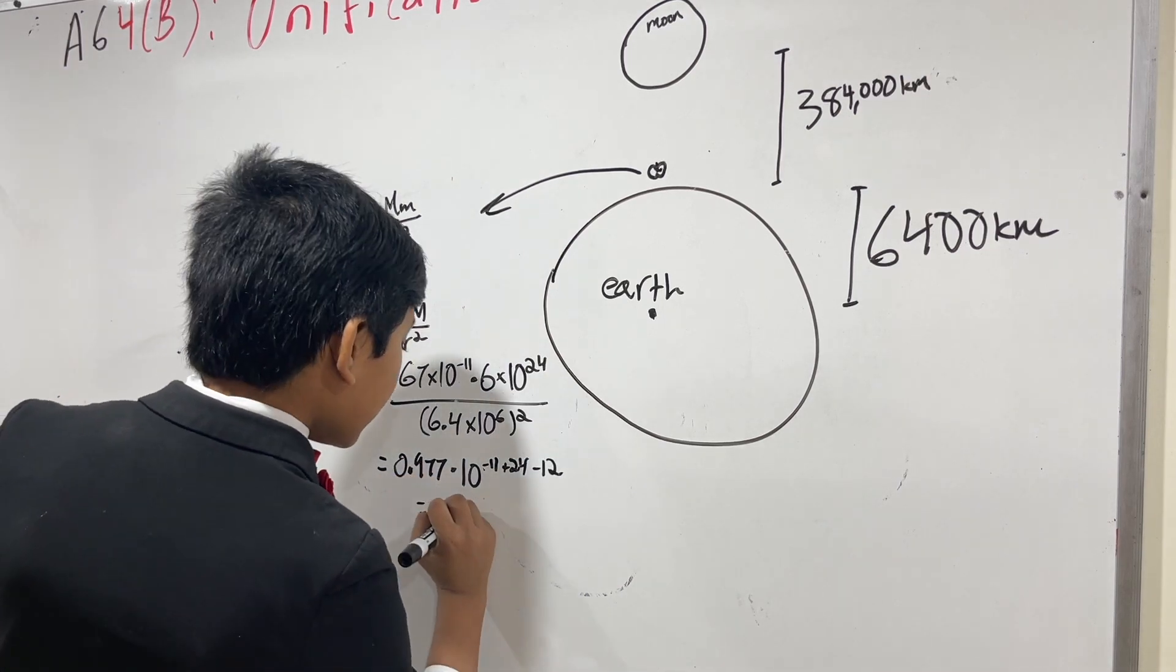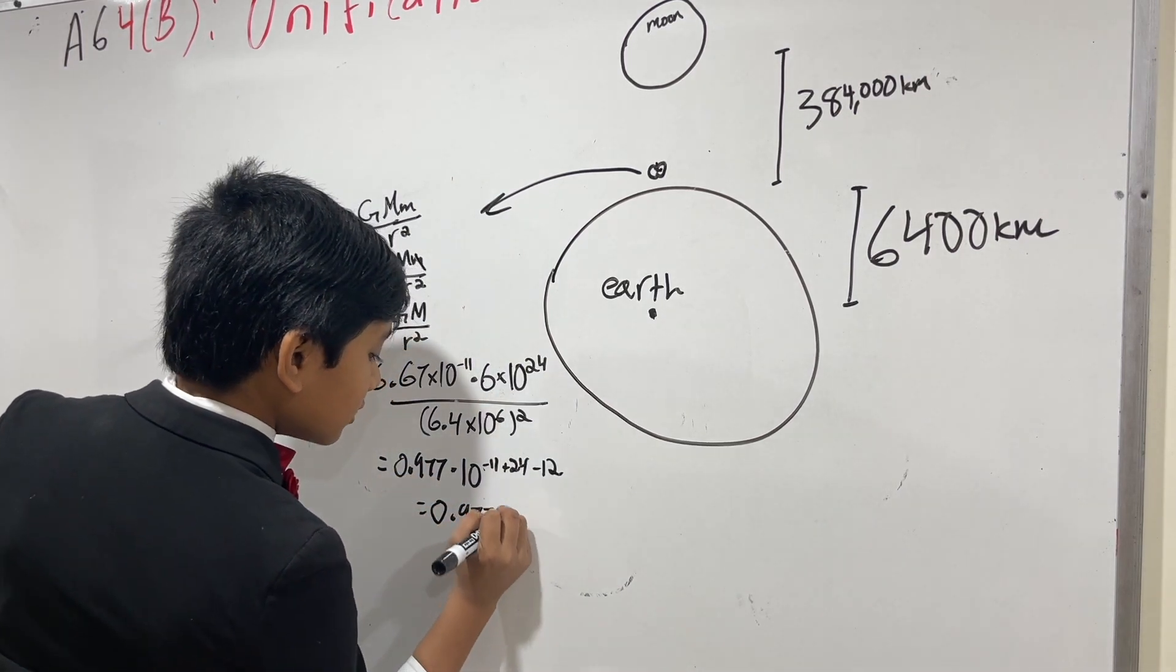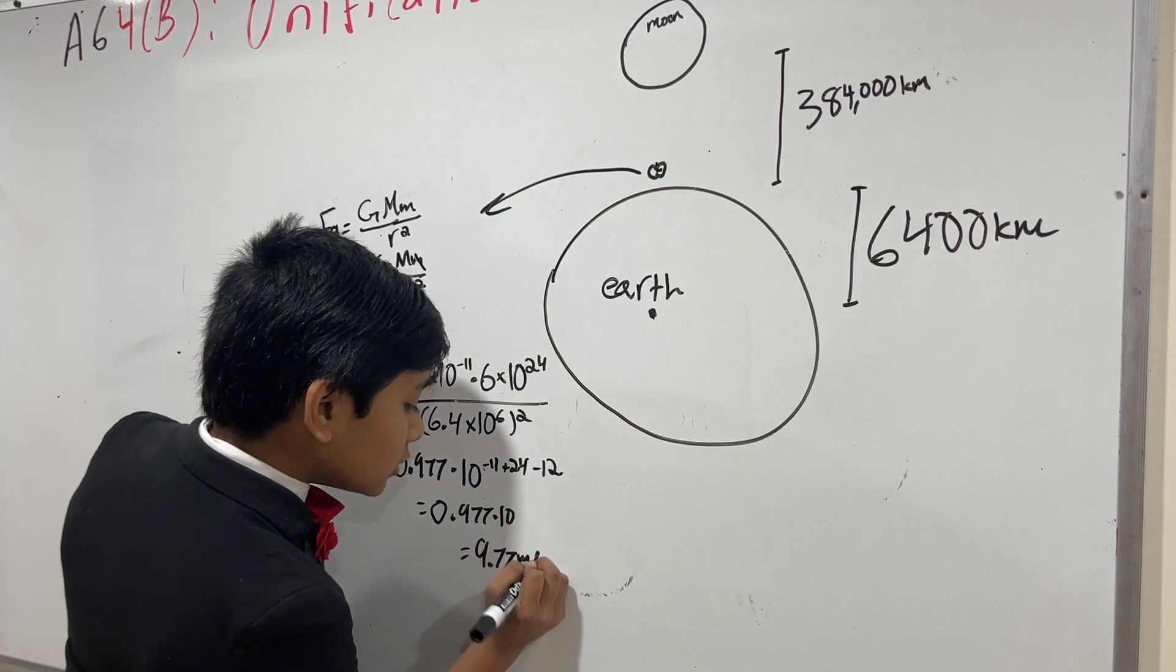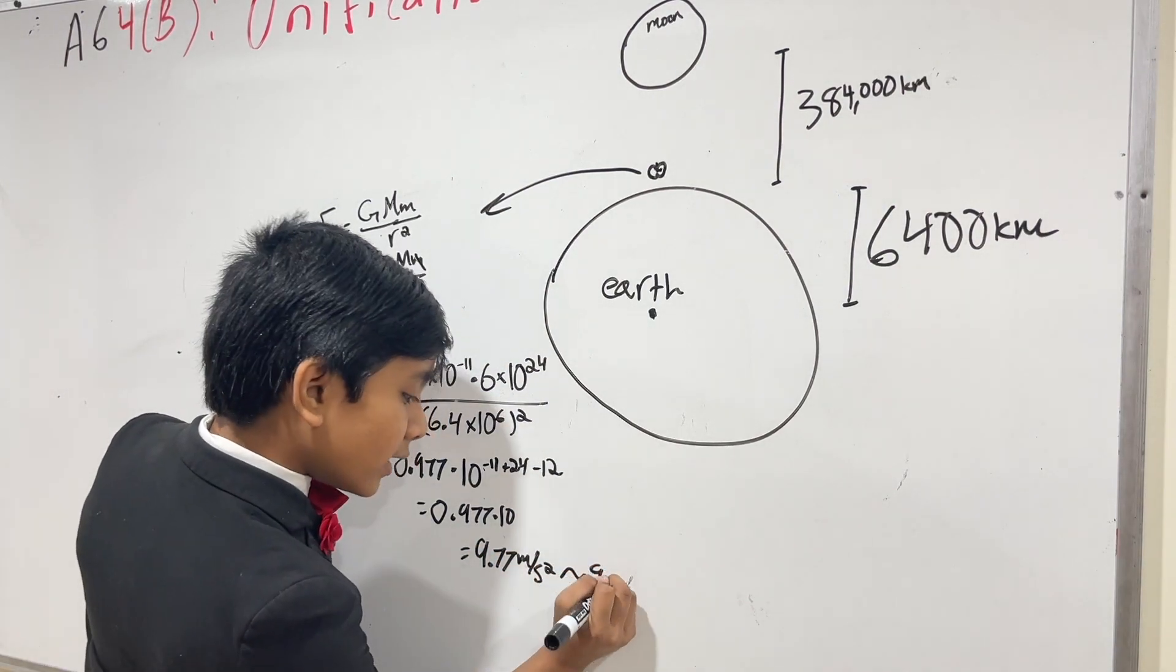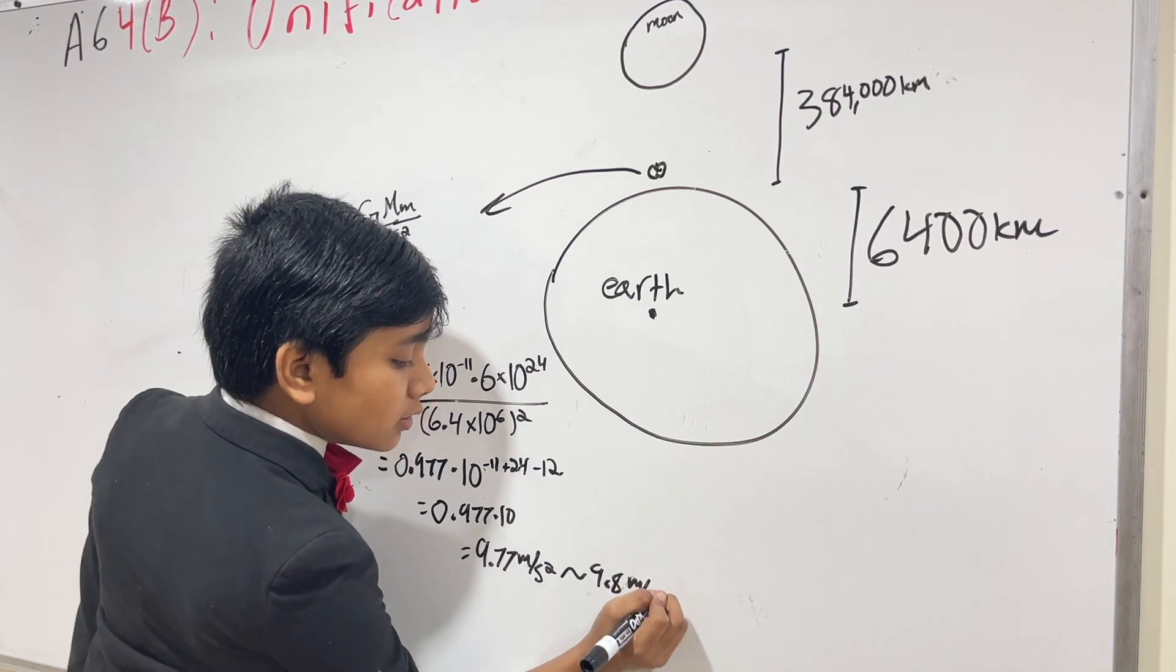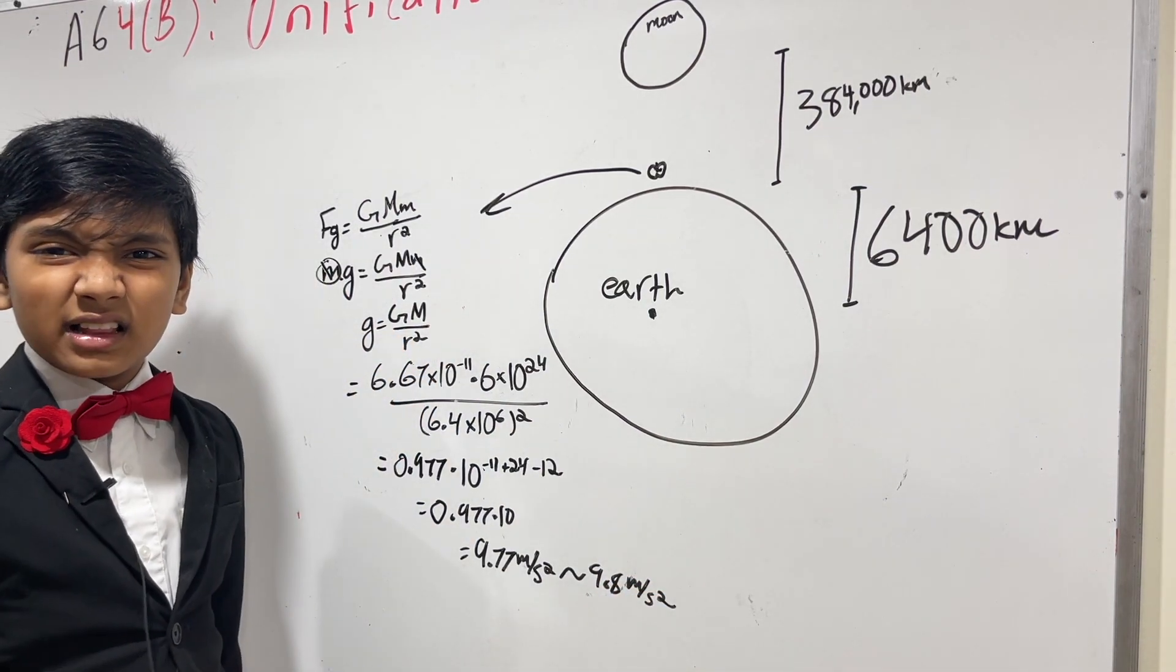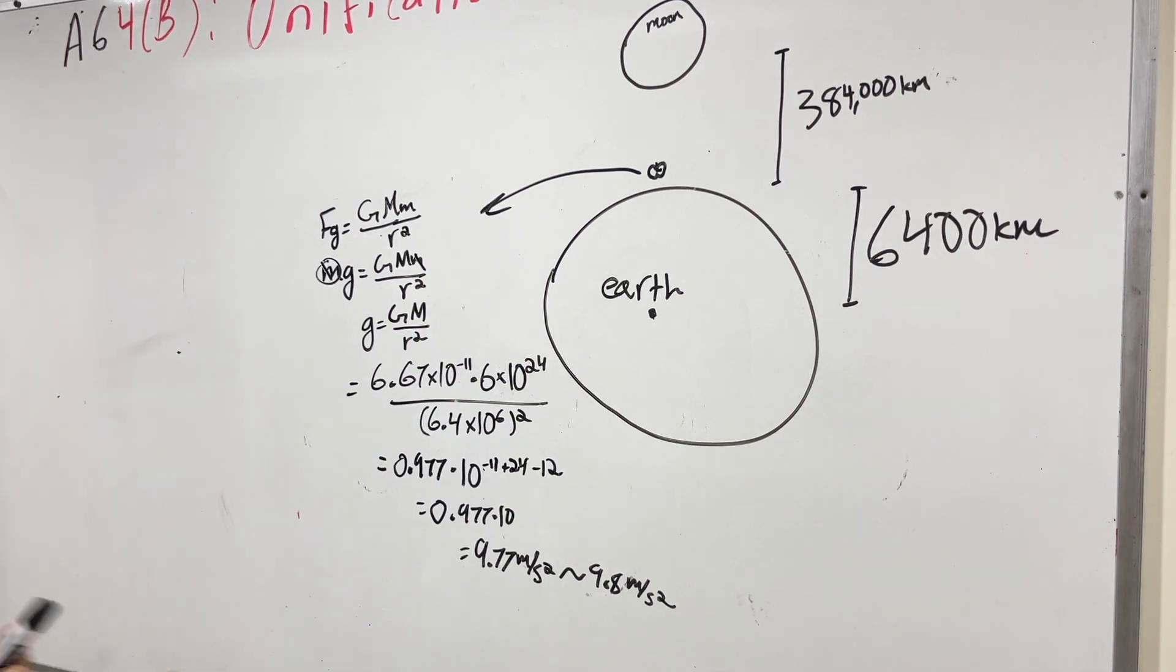So that just gives us 0.977 times 10, which is 9.77 meters per second squared, close to 9.8 meters per second squared. But we didn't use exact numbers. So that's why that's a little less than the actual value.